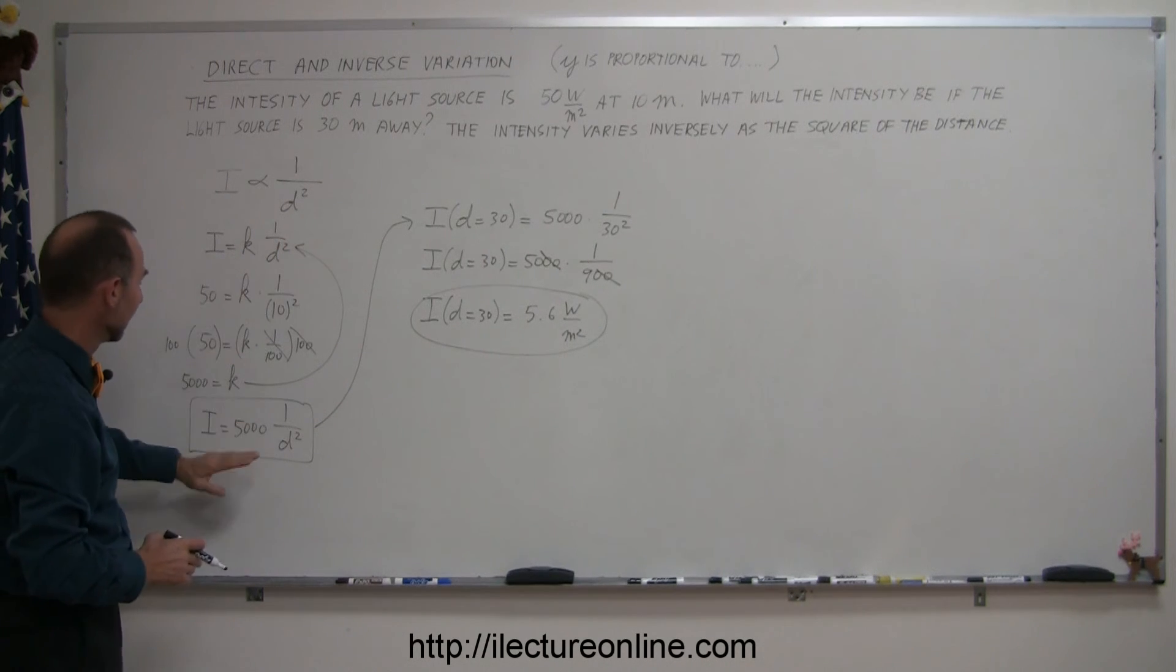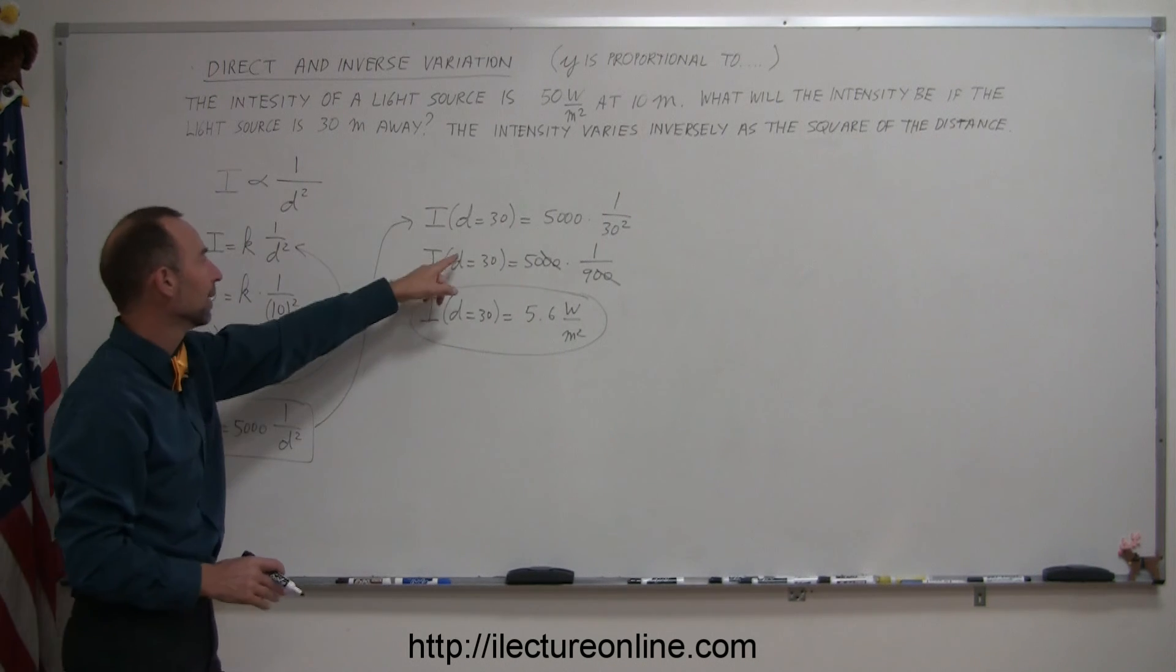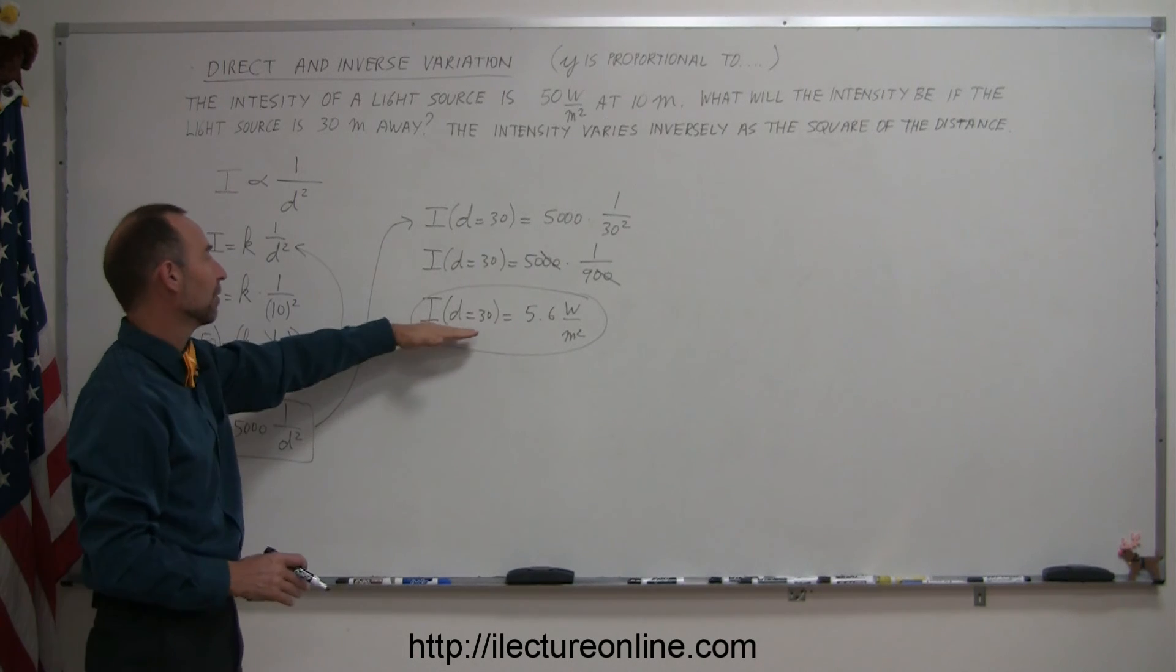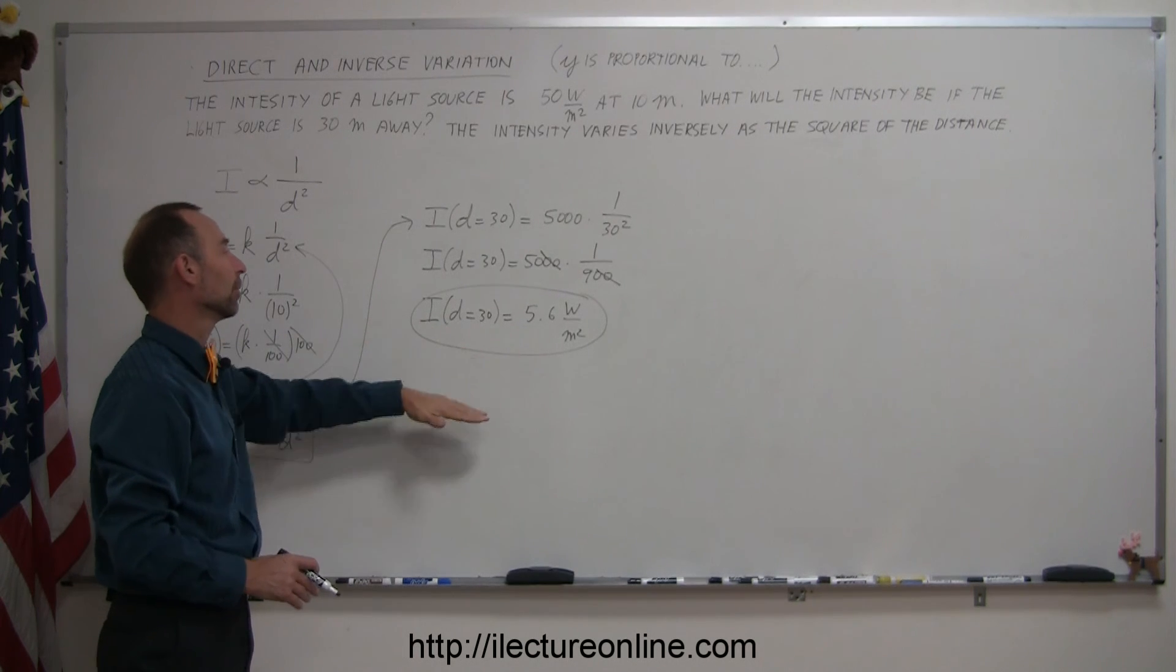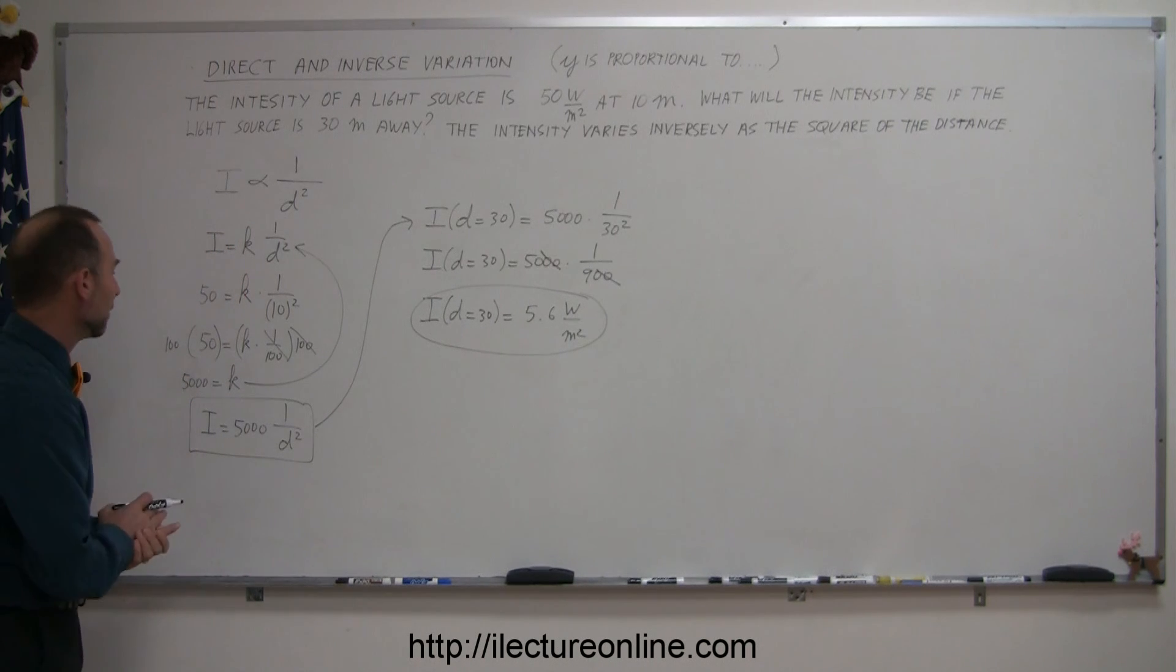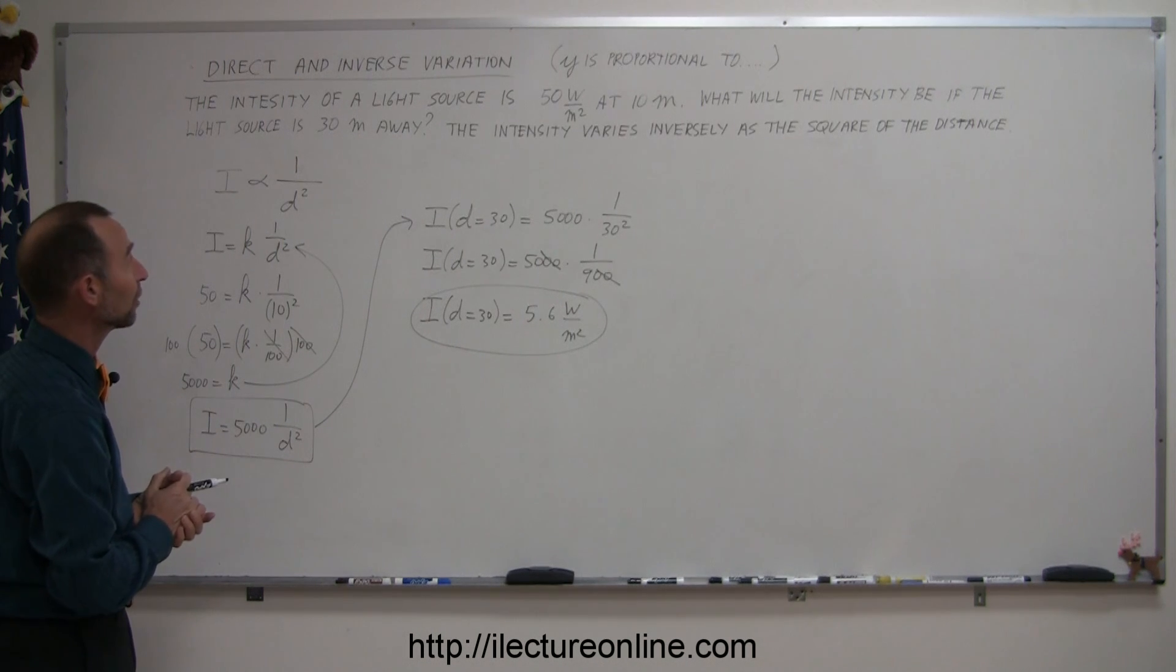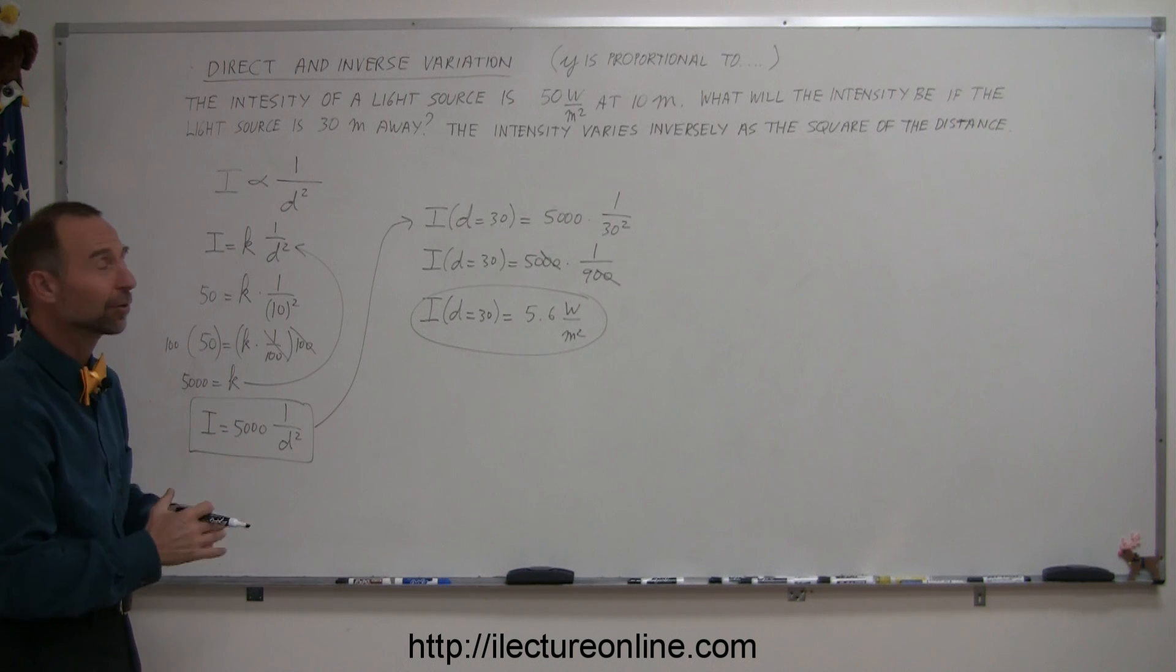Once you do that, you plug that back in to get your equation including the value of k, and then you plug in a new value for the independent variable to calculate the value for the new dependent variable, assuming you know what the information is that's given to you. Alright, that's how you do these kinds of problems. And let me come up with a few more examples to solidify your understanding here.